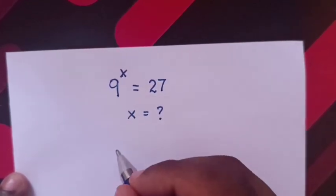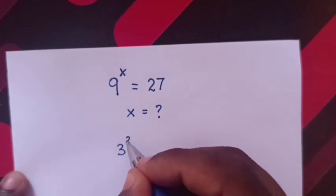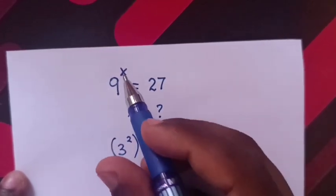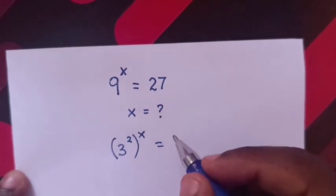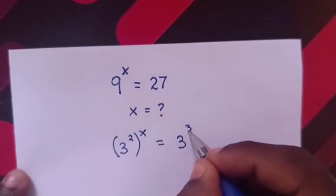So, from this 9, 9 is same as 3 square bracket power of x is equal to 27. 27 is same as 3 power 3.